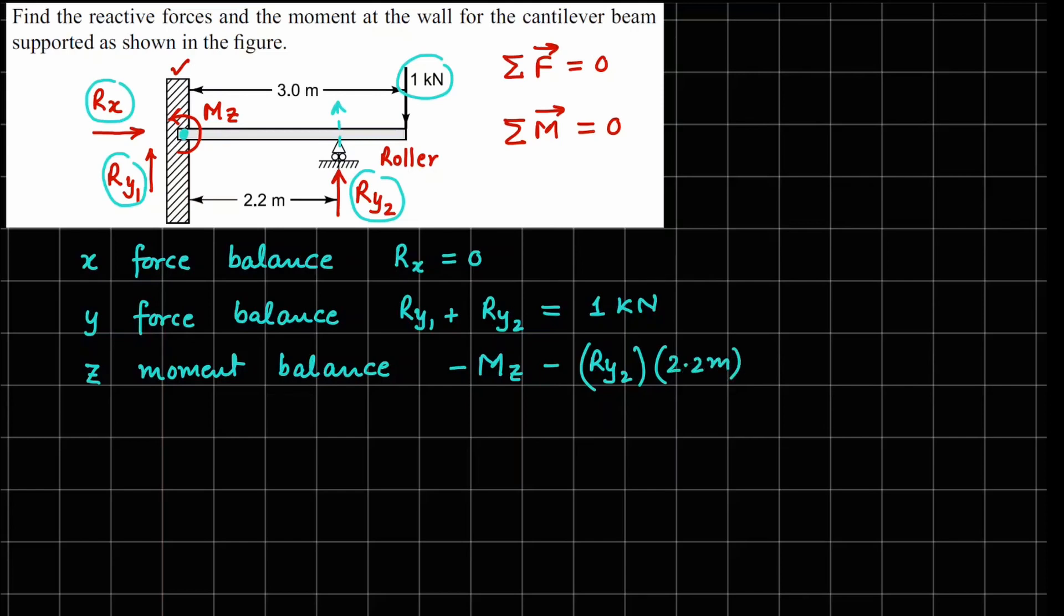And the third force which is your 1 kilonewton in the y direction about this cantilever point, if you follow the force direction, it's going to be in the clockwise sense. So we can write a positive moment from this 1 kilonewton force.